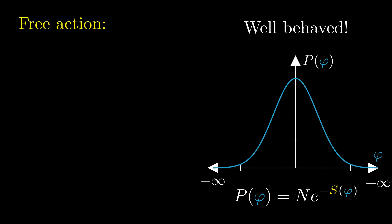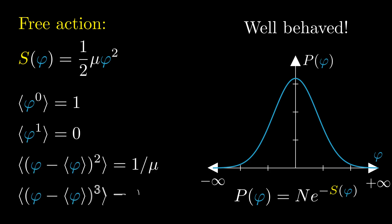For the free action, if we write it as 1 half times mu times phi squared, we can compute all moments to be zero, except for the variance, which is equal to 1 over mu. This is also evident from the graph on the right, where we see that the mean must be zero, the variance is 1 over mu, and since the graph is otherwise symmetric, the higher moments also vanish.